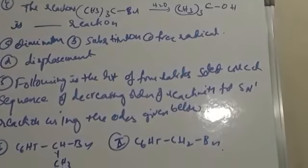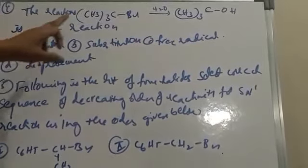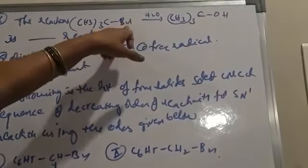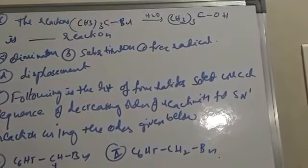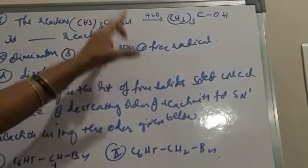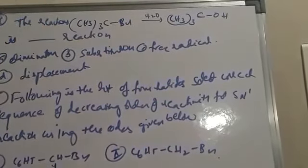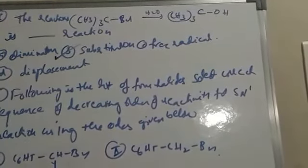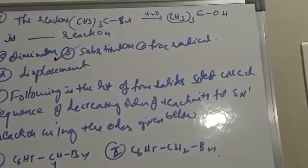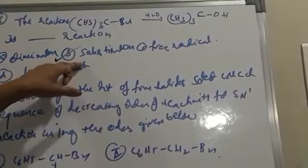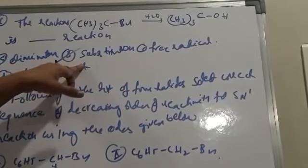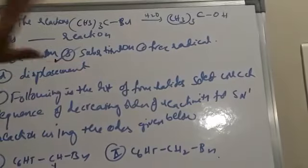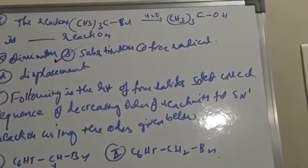A reaction is given: tertiary butyl bromide reacts with water to form tertiary butyl alcohol. Here, the bromine atom gets substituted with the OH group — OH minus acting as the nucleophile. Since bromine is replaced with OH, this type of reaction is called a substitution reaction, where one atom or group gets substituted with another. These are also called nucleophilic substitution reactions.